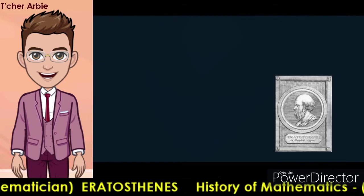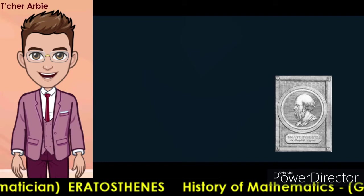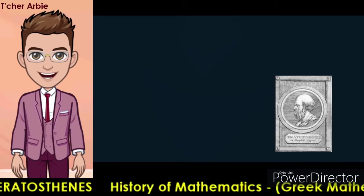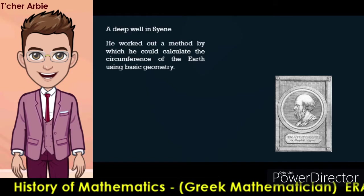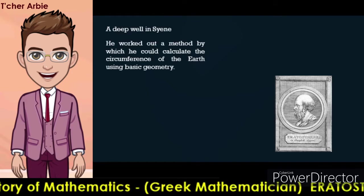Eratosthenes' most famous contribution to science was his calculation of the circumference of the earth, which he completed while working on the second volume of his geography. After hearing about a deep well at Zaine near the tropic of Cancer in modern day Aswan, where sunlight only struck the bottom of the well on the summer solstice, Eratosthenes worked out a method by which he could calculate the circumference of the earth using basic geometry.